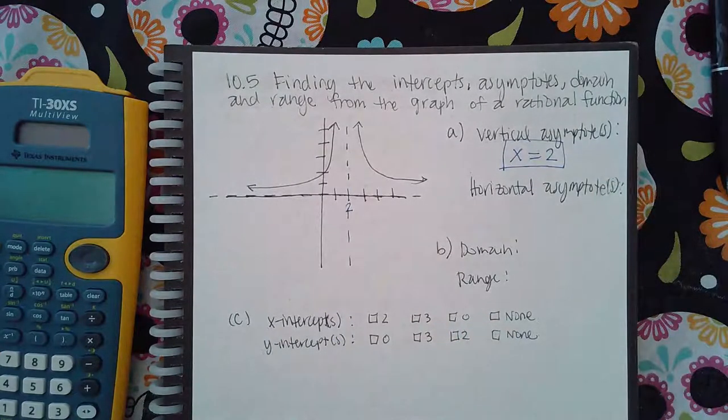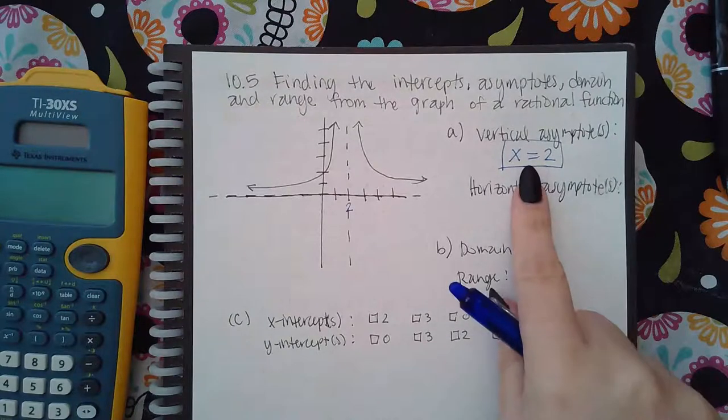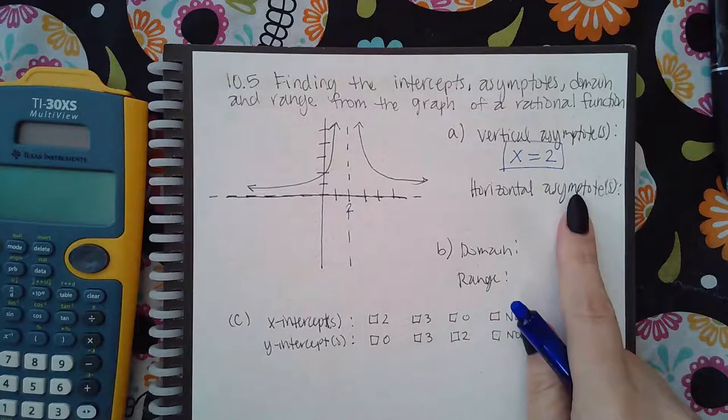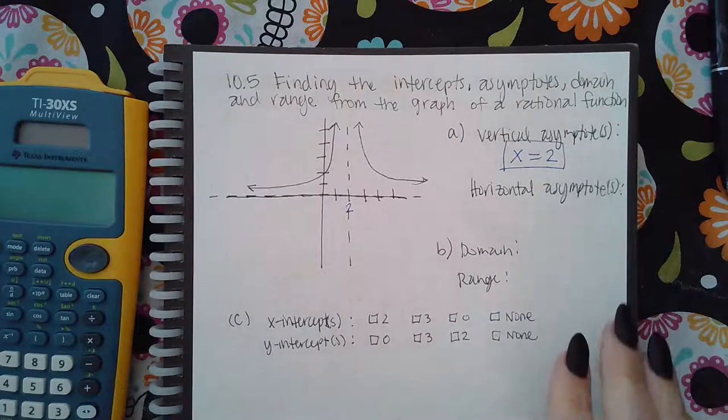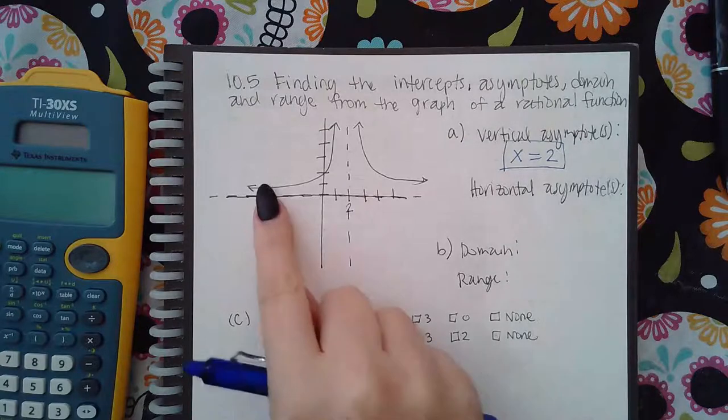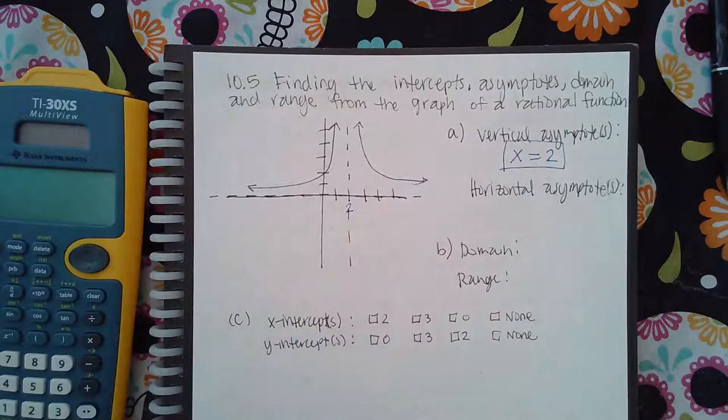Same thing with horizontal asymptotes. There are horizontal lines that the graph could possibly actually touch, but the ends will never touch it. So it might touch it in the middle, but it's not going to touch it on the ends.